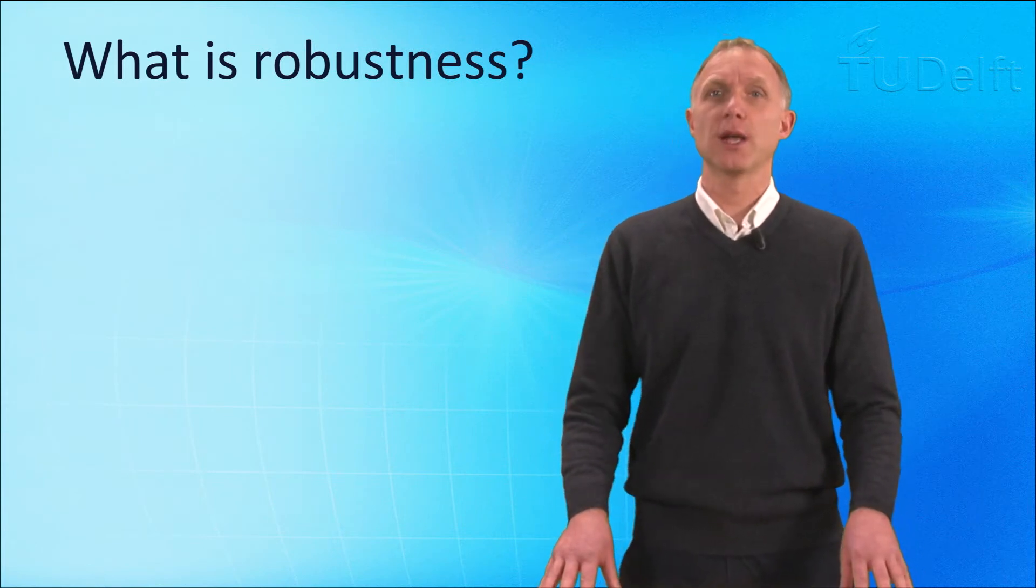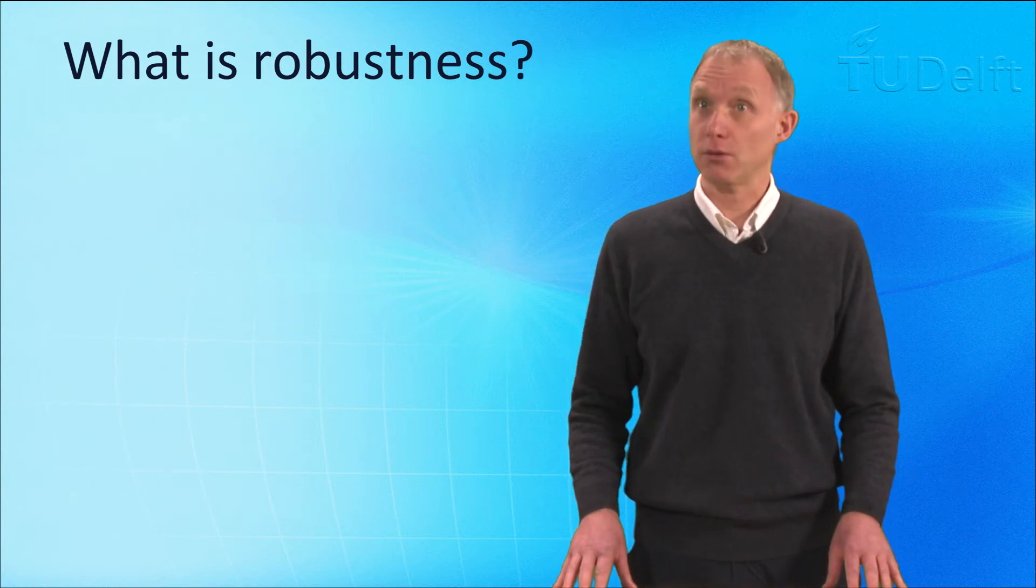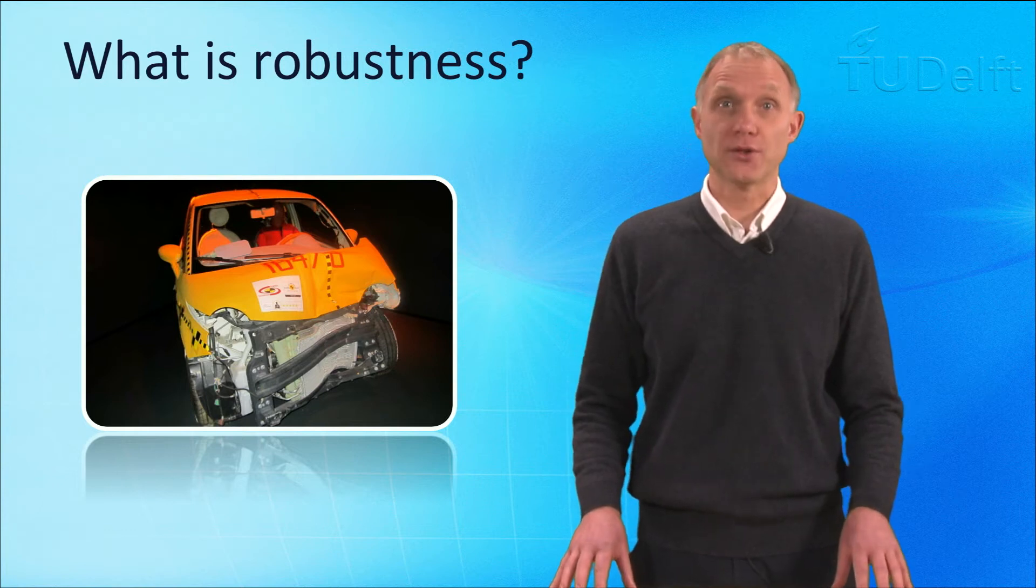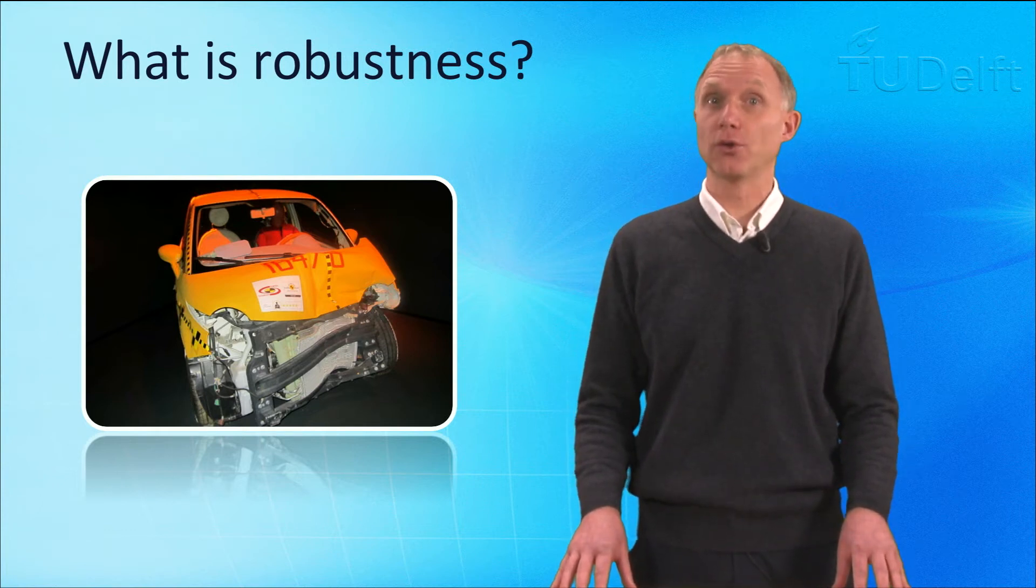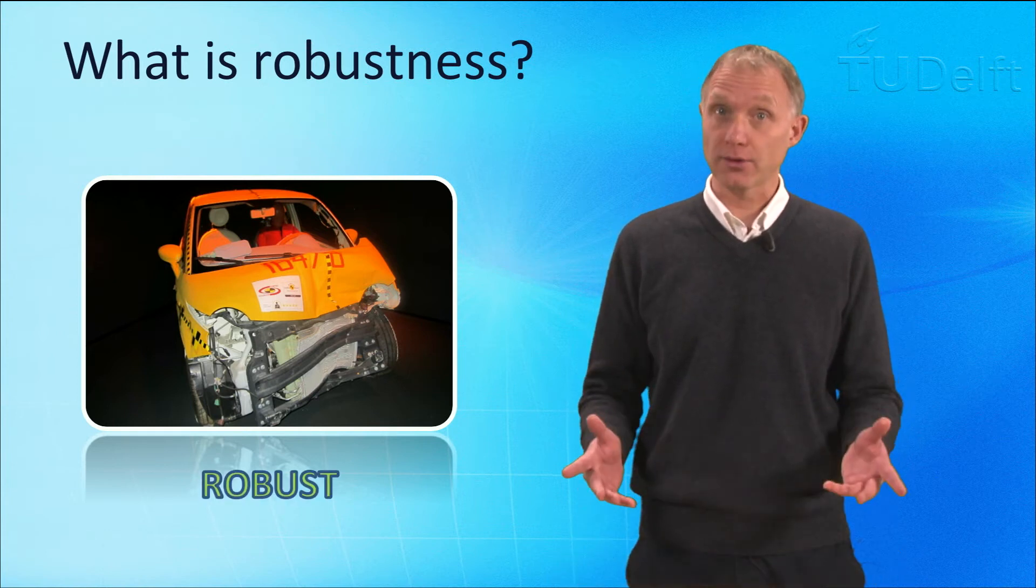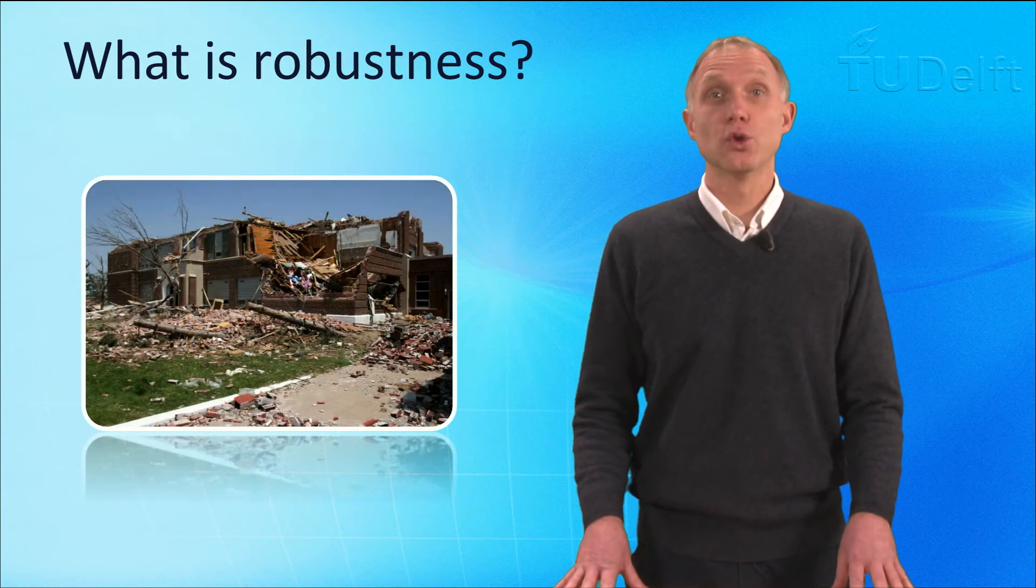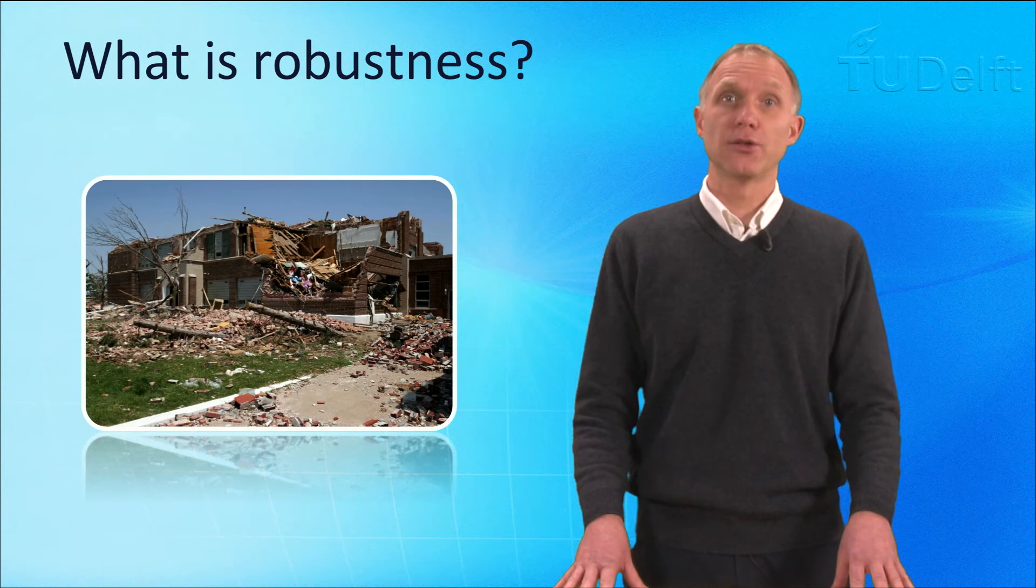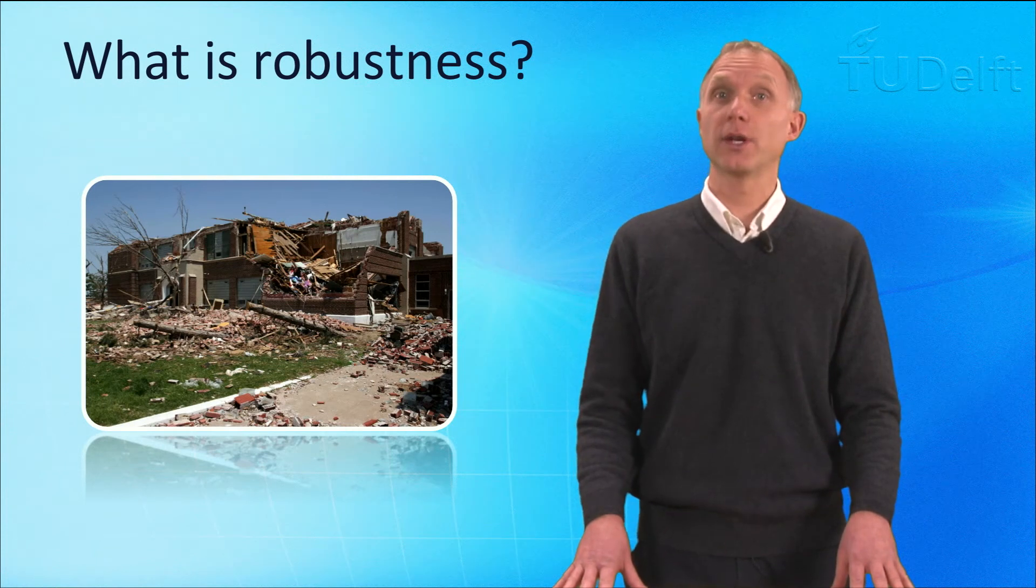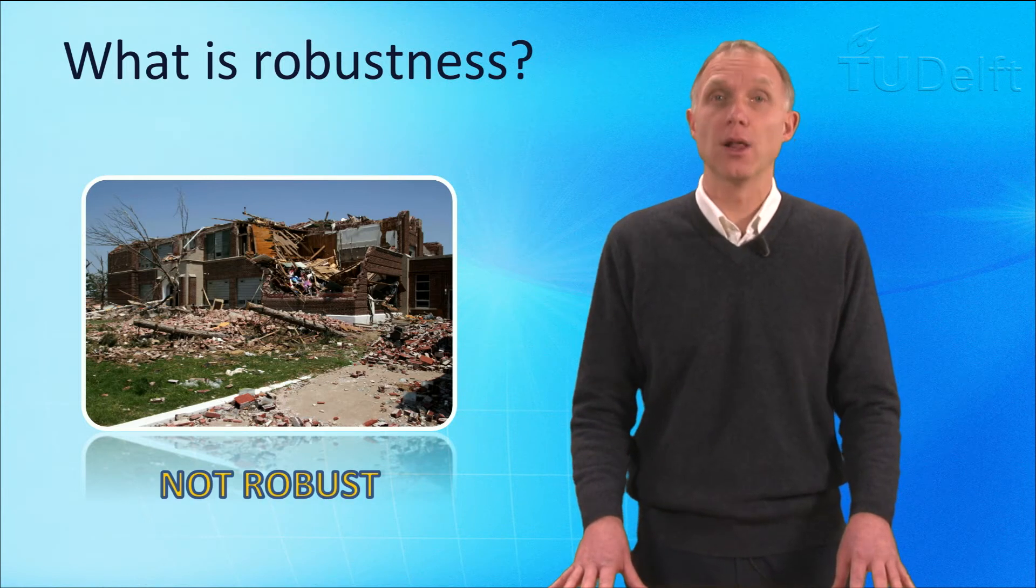Before answering this question, let us first find out what we consider as being robust. Is a car that withstands accidents while saving the passenger's life considered as robust? The answer is yes, because the passenger survived the accident. Do we consider a house that is destroyed by a typhoon as robust? The answer here is no, because a robust house should not fall apart.